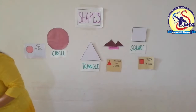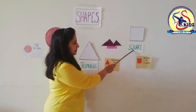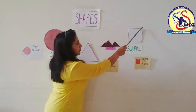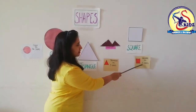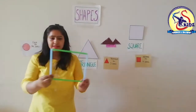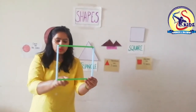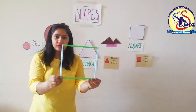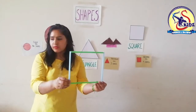Okay kids, we will move on to the third shape — that is square. This is a square. Square has four sides — one, two, three and four. How many sides does the square have? It has four sides.